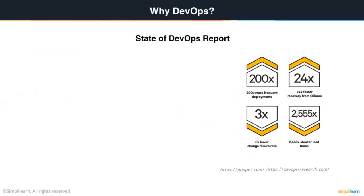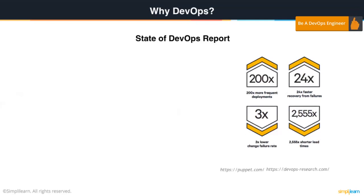Puppet Labs and DORA, which is a DevOps Research Organization, publish every year a report known as the State of DevOps Report, compiled after extensive surveys of IT individuals and companies. They have been publishing this report for the past five or six years. You can find all past reports on the internet free of cost — just type in 'State of DevOps Report' and the year you want, and you can get it in PDF format. This report compiles information about people who have implemented DevOps and the benefits they have seen.